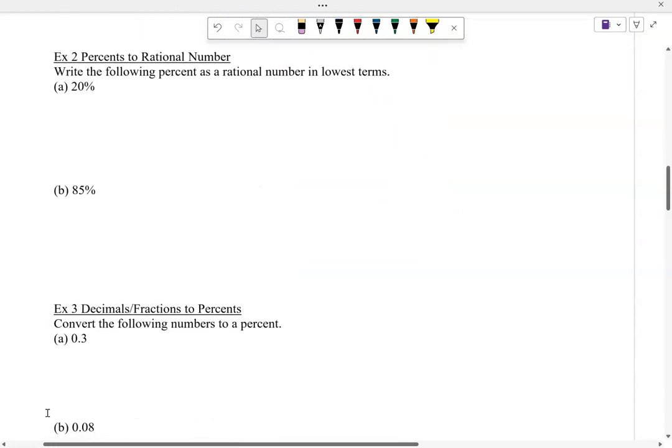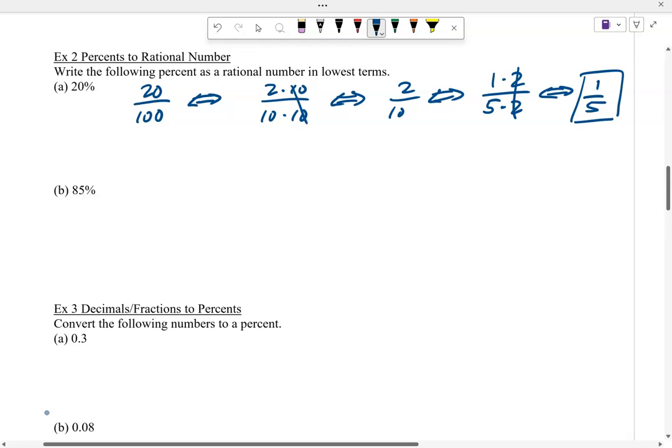Let's look at taking a percent now and changing it to a rational number. 20 percent means 20 per hundred. We've got to reduce this to lowest terms. 20 is 2 times 10, 100 is 10 times 10. Notice the tens cancel, so now we've got 2 over 10. But we can go even further - 2 tenths is 1 fifth. So 1 fifth is 20 percent written as a rational number. 85 percent would be 85 one hundredths. 85 is 5 times 17, 100 is 5 times 20. So 85 percent is the same as 17 over 20.